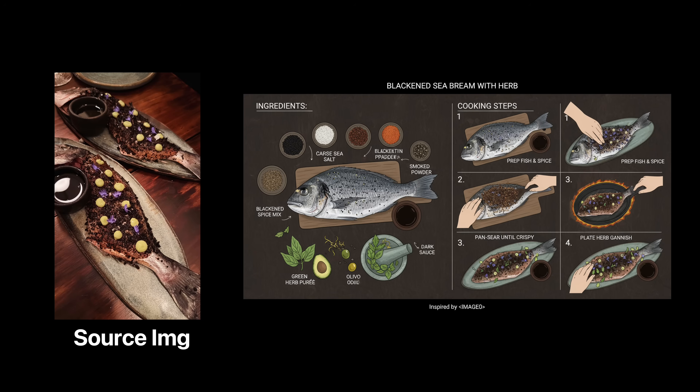Cooking recipes from a single image: Nano Banana can create recipes and steps on how to cook your food after you take a picture of it. I photographed a fish dish I tried at a restaurant in Montreal and asked Nano to create a step-by-step guide on how to cook it myself. It may not be 100% accurate, but it's quite helpful for those who need visual aids.